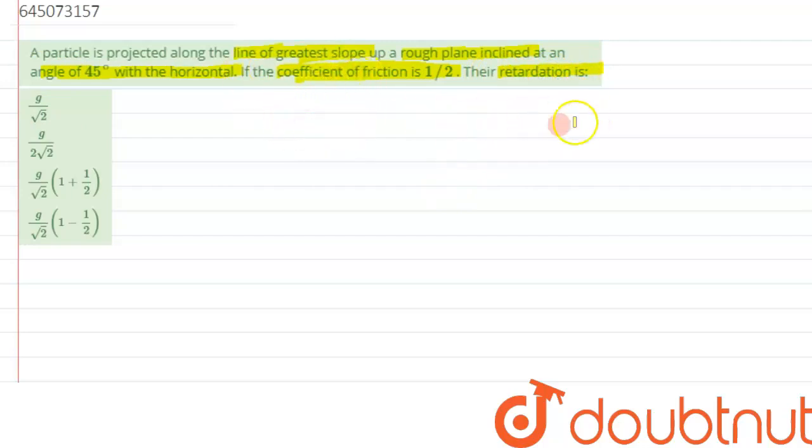There is a particle which has been projected upward on a line of greatest slope, and that plane is having a coefficient of friction as one by two since it has been given as a rough plane. So first let's try to understand what exactly is the meaning of line of greatest slope.